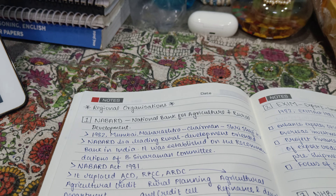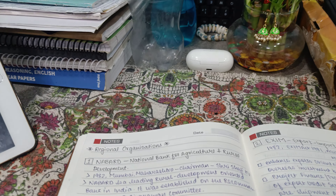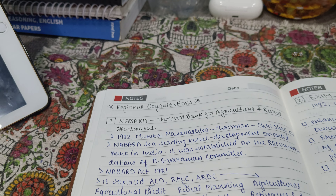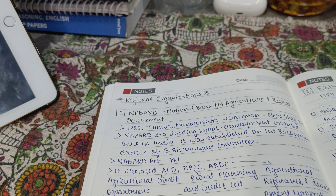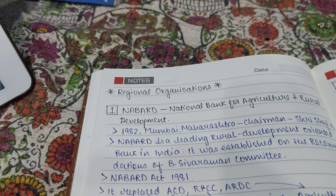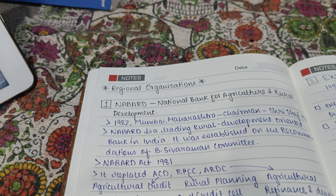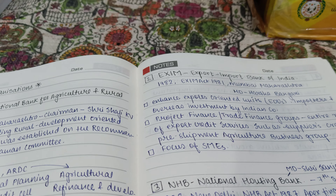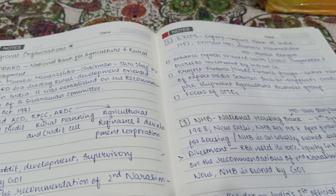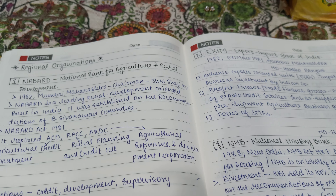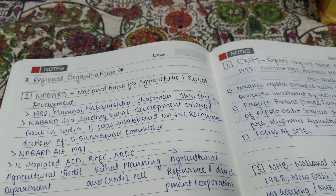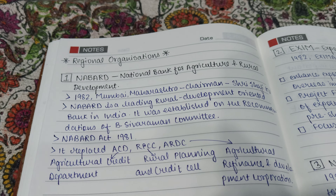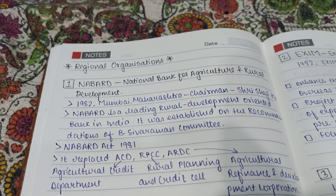Hi everyone. This is a random day in RBI Grade B preparation. In this series we are going to discuss about regional organizations. It is clearly written in the exam syllabus of RBI Grade B that regional organizations will be asked. In this video we'll discuss about first NABARD, second EXIM, and third NHB. These three will be covered in this video and the rest in the next video. You can access it by going to the playlist about regional organizations.